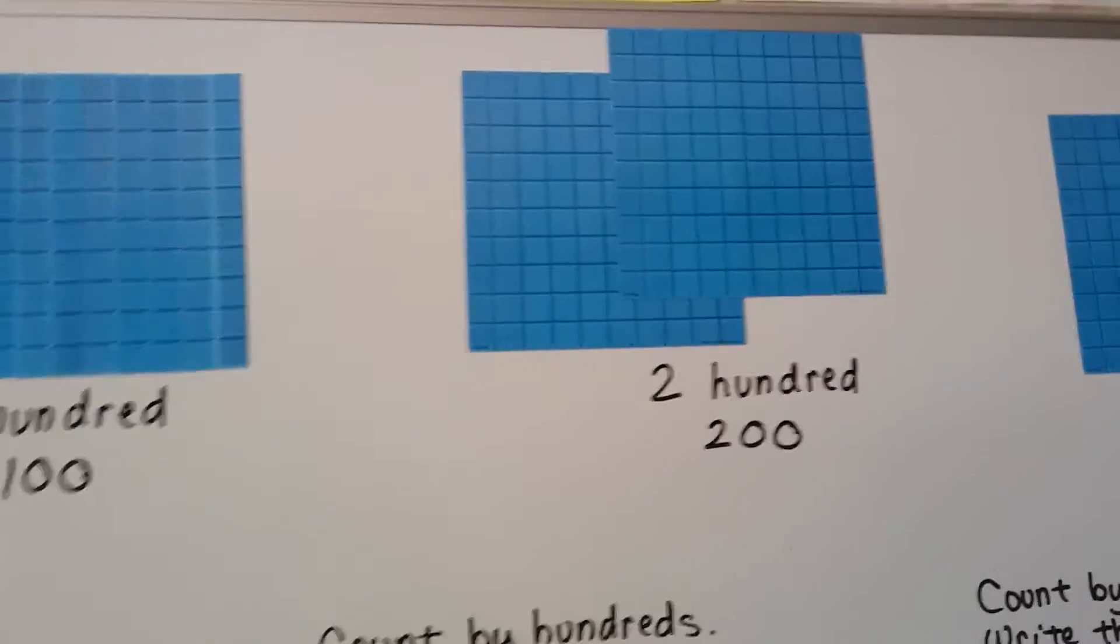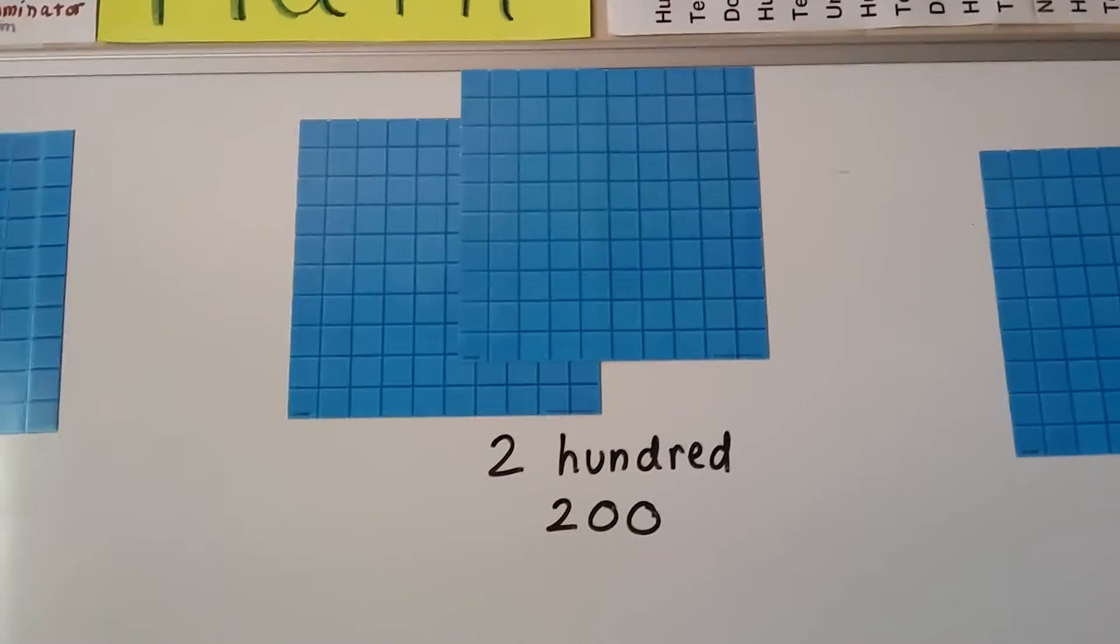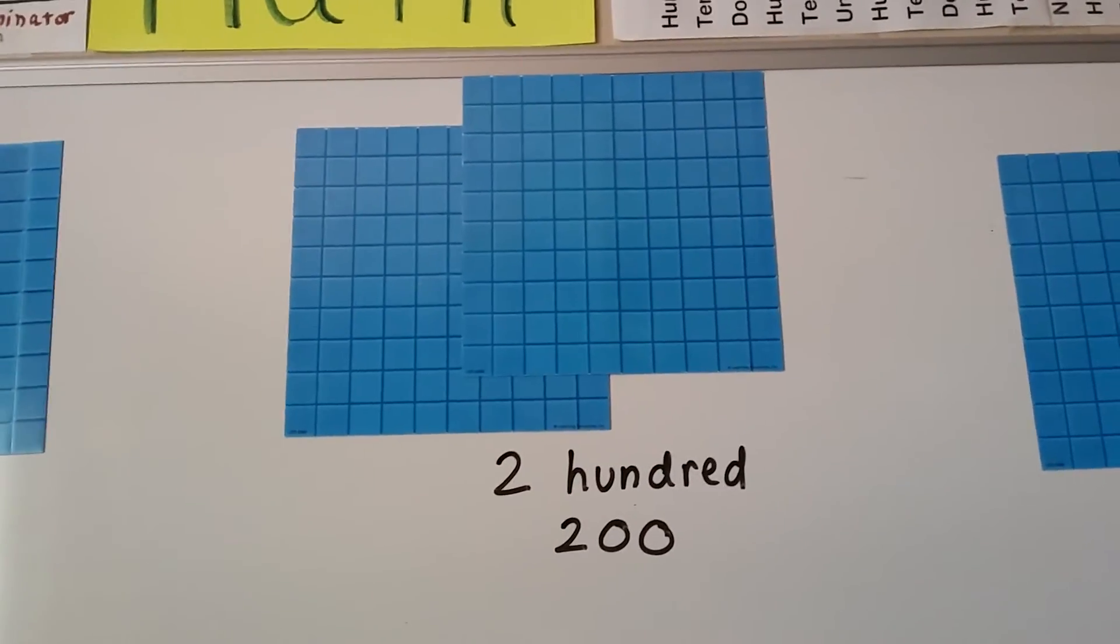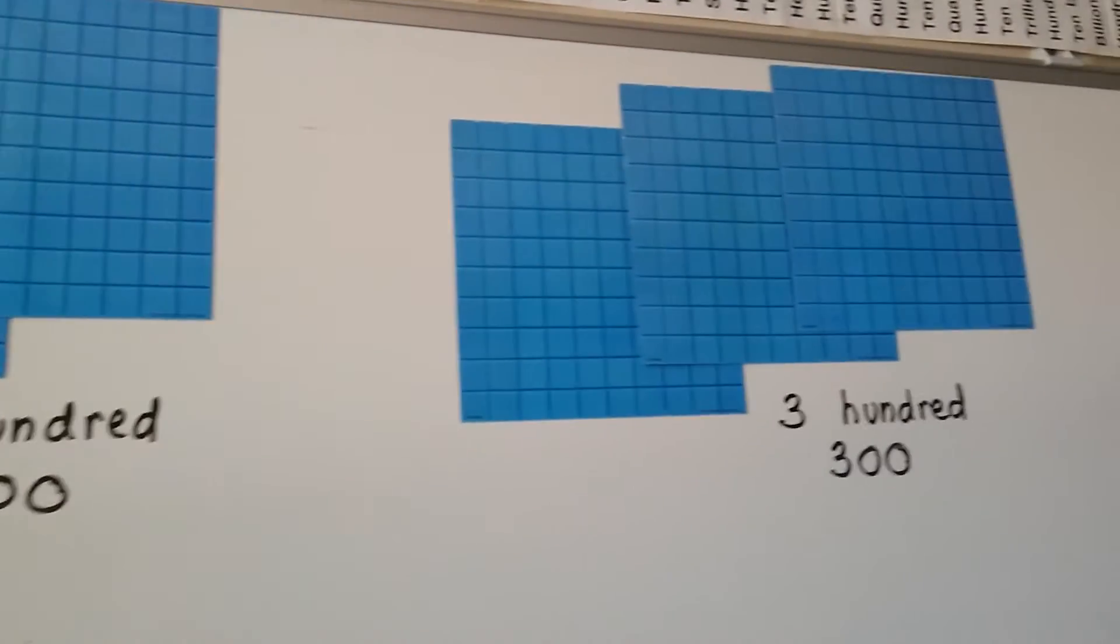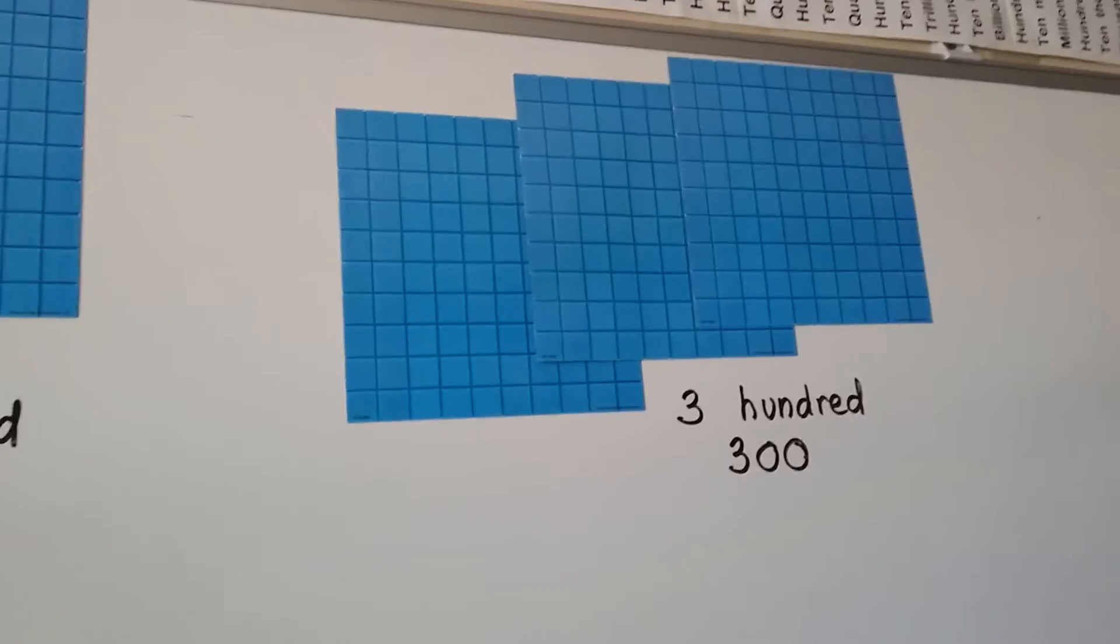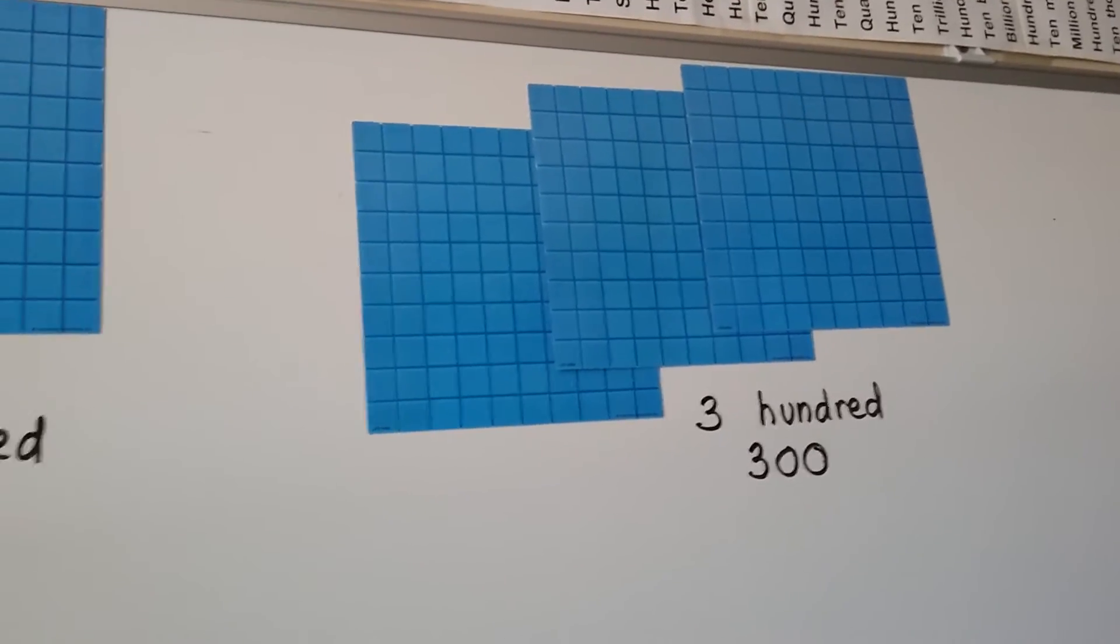When we have two of these, that's 200, written as a 2, 0, 0. There's a two in the hundreds place. When we have three of them, we have 300. 3, 0, 0. A three in the hundreds place.